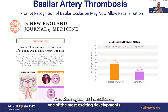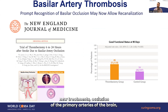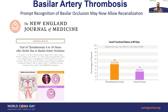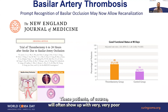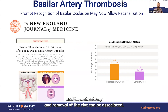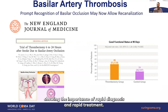One of the most exciting developments in this field over the last 10 years has been advanced technology allowing new treatments for occlusion of the primary arteries of the brain. Recent data has suggested that recanalization of the basilar artery via thrombectomy — removing the clot — can be associated with good outcomes. These patients often present with very poor neurologic exams and very depressed levels of consciousness, yet thrombectomy can be associated in a significant number of patients with improved outcomes, again showing the importance of rapid diagnosis and rapid treatment.